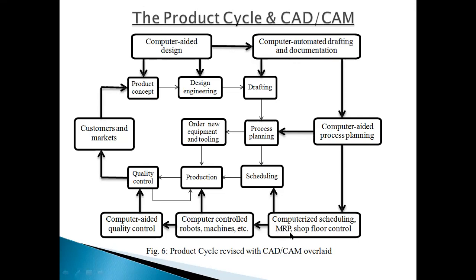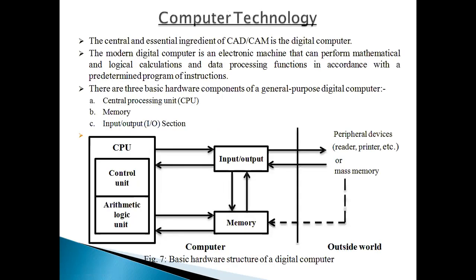Then computerized scheduling, then MRP and scheduler control — you can control your scheduler by computer, which is a CAM application. Then computer-controlled robots and machines for production — you directly use computer-controlled robots and machines to get the production output. Then computer aided quality control — quality is checked by computer. If quality is not okay, go for production again; if okay, go to market or customers.